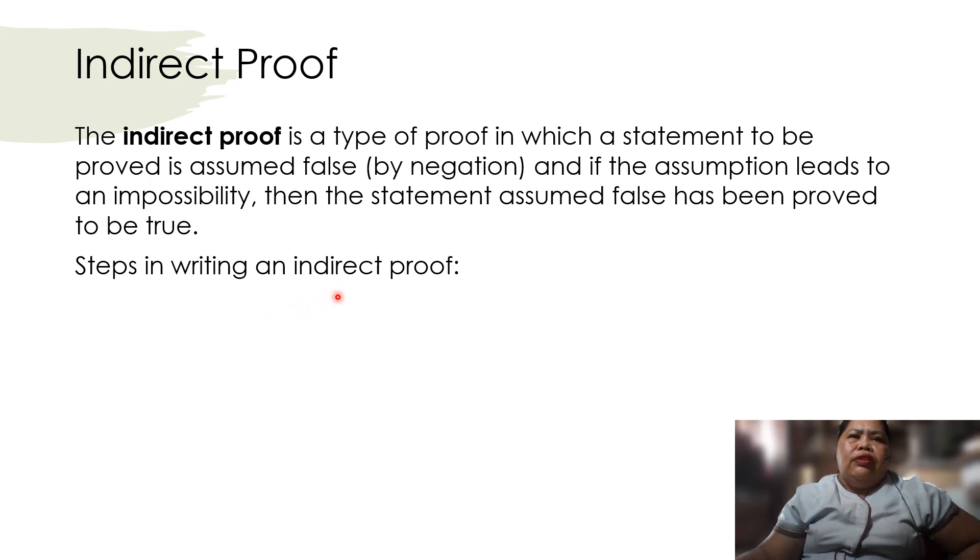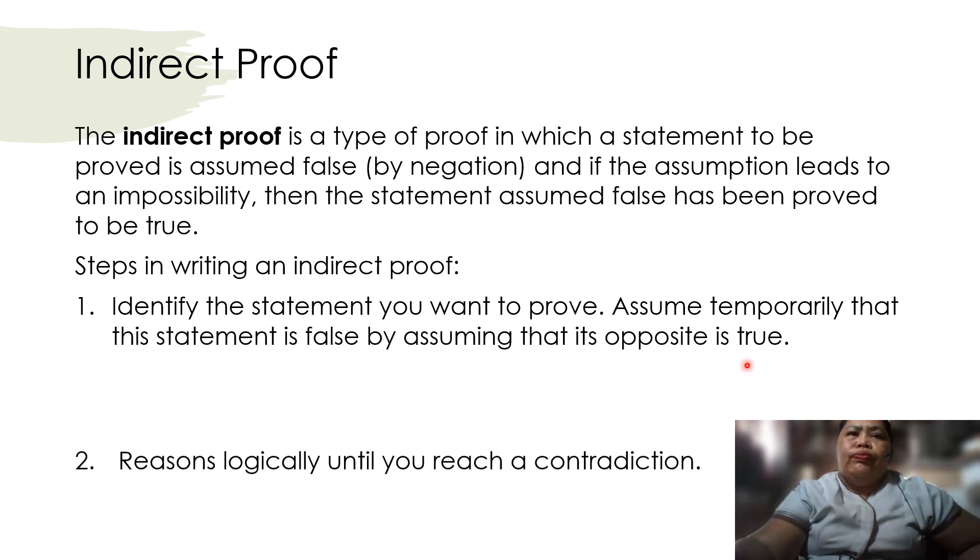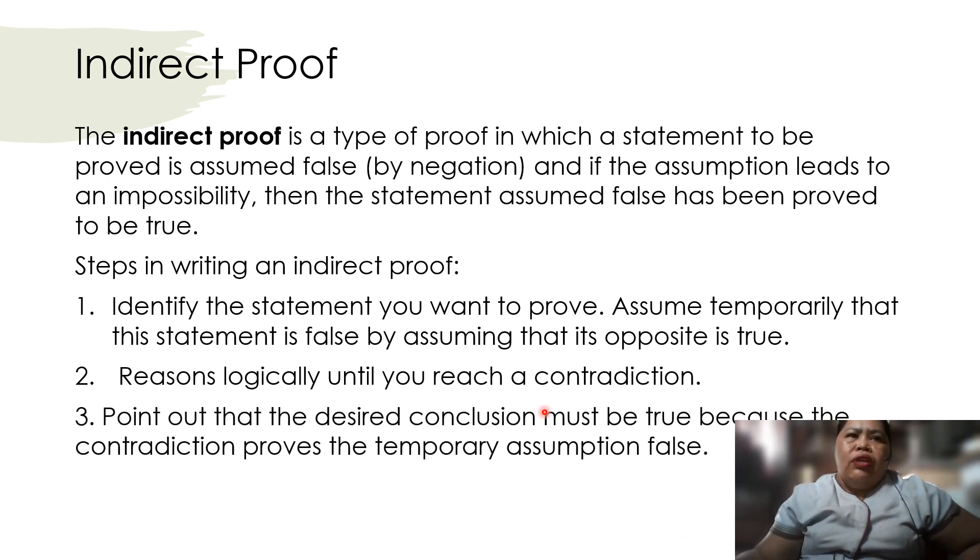Steps in writing an indirect proof: First, identify the statement you want to prove. Assume temporarily that this statement is false by assuming that its opposite is true. And then reason logically until you reach contradictions. Then point out that the desired conclusion must be true because the contradictions prove the temporary assumption false.